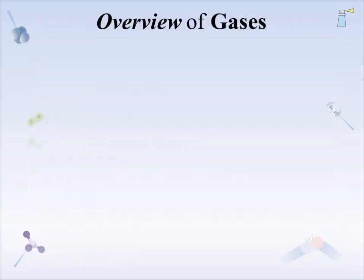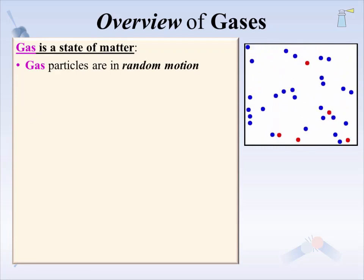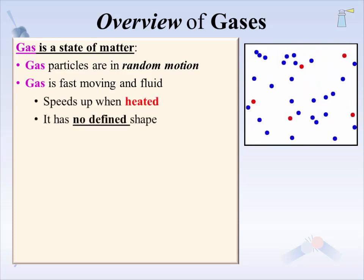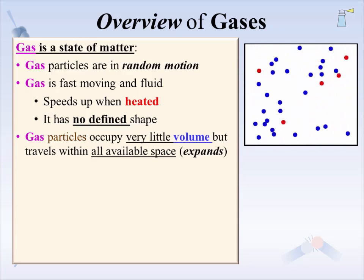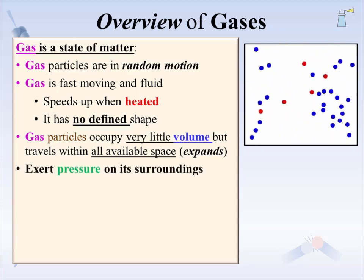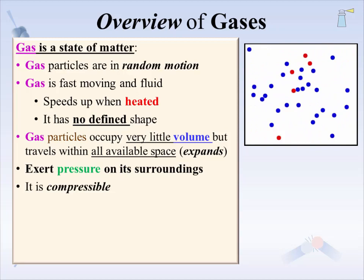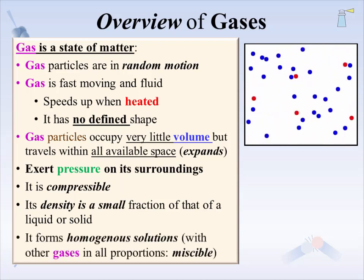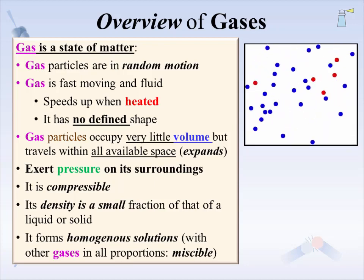By now we are familiar with gas being a state of matter, where gas particles are in random motion, and that motion is fast and fluid. Gas particles speed up when heated. Unlike solids, gases have no defined shape. The gas particles themselves occupy very little volume, but travel within all available space. Gas expands into its surroundings and exerts pressure on its surroundings. Gas is readily compressible, unlike liquids and solids, so its density is a small fraction of that of a solid or liquid. Gases form homogeneous solutions — they mix completely with other gases in all proportions. Gases are miscible.